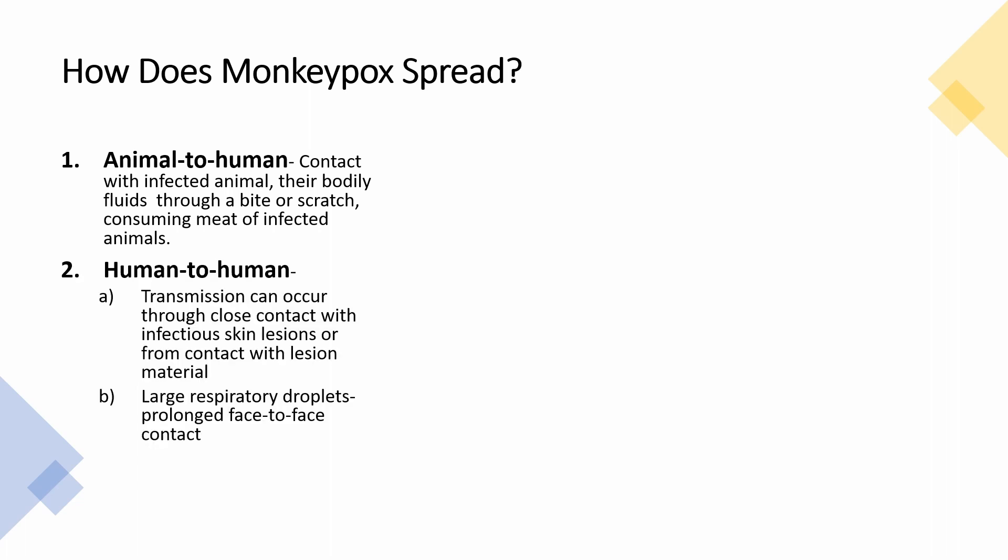Monkeypox can also spread through human-to-human transmission, which is limited and requires close contact with skin lesions of an infected person or contaminated objects like clothes and linen. Human-to-human transmission can also happen through large respiratory droplets, but this requires prolonged face-to-face contact — defined as within a six-foot radius for three or more hours in the absence of personal protective equipment.